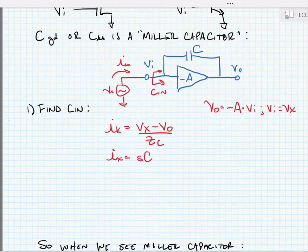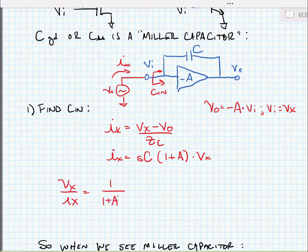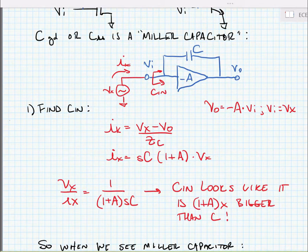We can simplify this. The impedance of the capacitor is equal to 1 over sC. And ultimately, we can now find Vx over Ix. So interestingly, this looks like the impedance of the capacitor, but it looks like one that has 1 plus A times bigger than just the capacitor by itself. So by wrapping the capacitor around the inverting amplifier, we've made the capacitor look like it's much bigger than just the capacitor by itself. In fact, bigger by the factor of the gain of the amplifier.